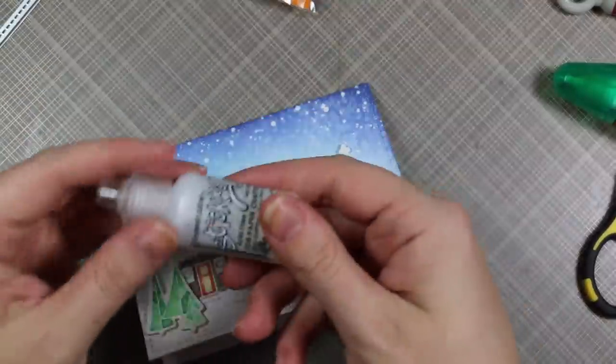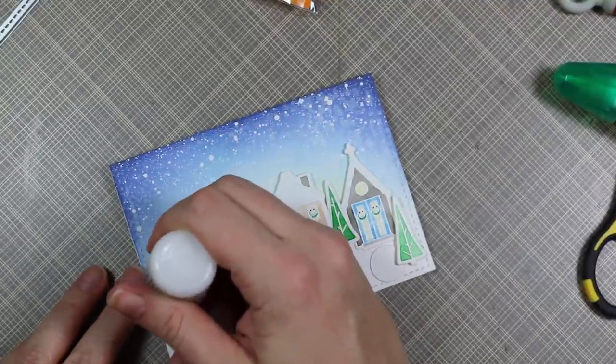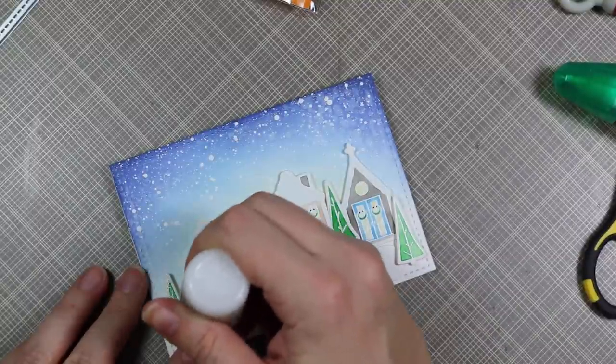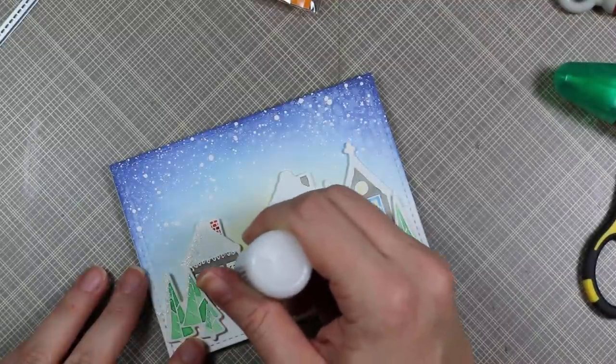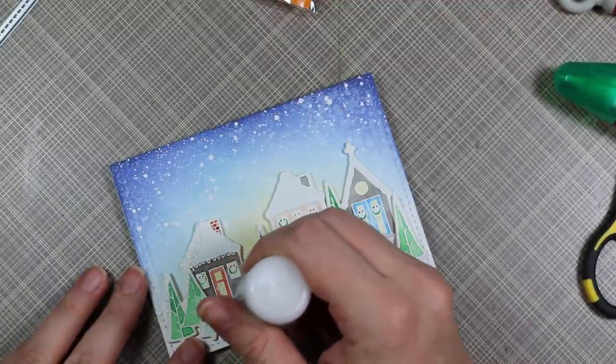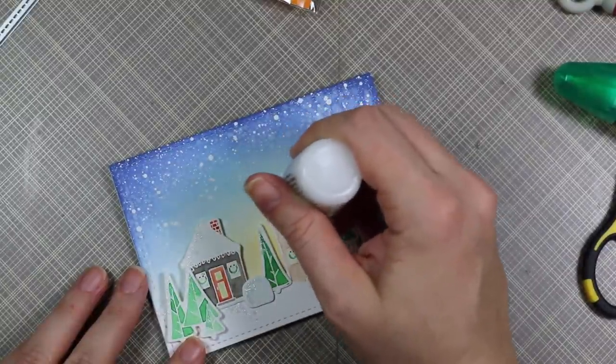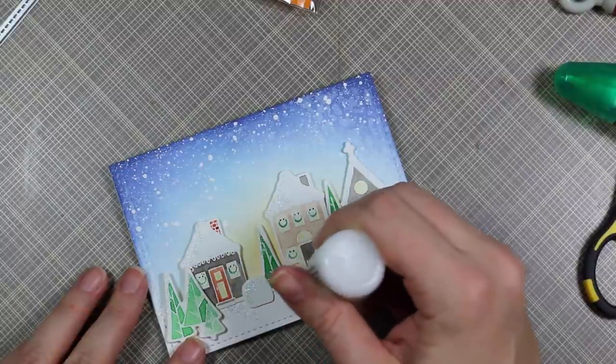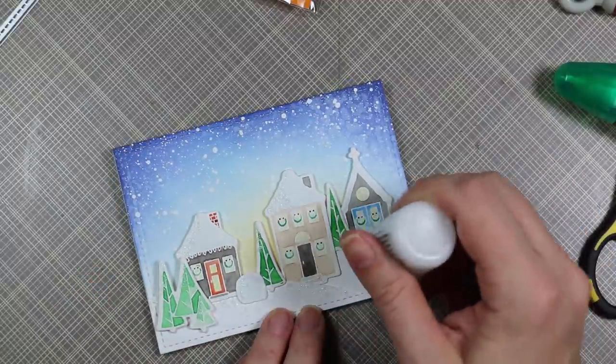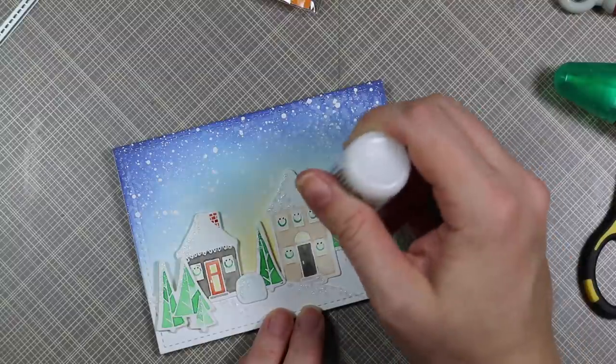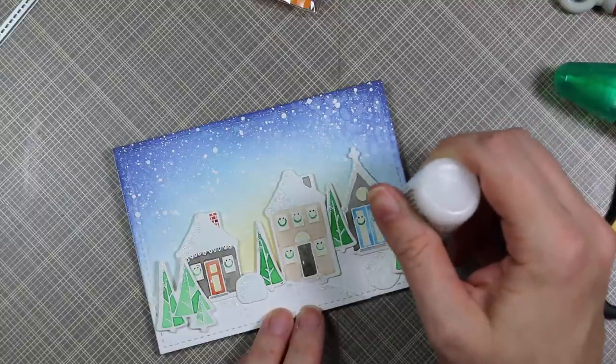These were so much fun. As a final little bit of dimension and embellishment, I grabbed some frosted lace stickles, which of all the stickles, this is the least sparkly. It's more of a texture. It has a white glitter to it, so it doesn't have that reflective element to it, which works really well for snow in my opinion. I'm just lightly dabbing—it's hard to show on camera, but I'm just lightly, lightly dabbing all along like the tops of the houses and the trees, the snow and all that to create this fun little bit of textured, somewhat sparkly look to give it some additional detail.